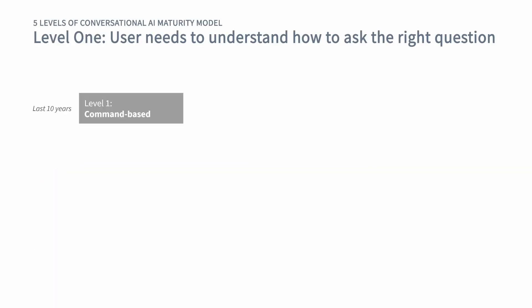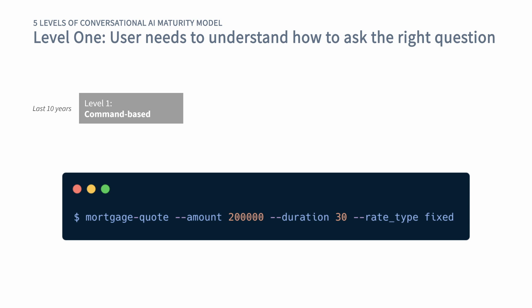At level one, assistants are very easy to make as a developer, but it puts all of the cognitive load on the end user. The user will need to understand how to ask the right question or how to fill a form in the right way. It's not the greatest experience for the end user, but it's still much better than doing error-prone conversations by hand. There's still some automation happening, but we would like to alleviate the end user a little bit.